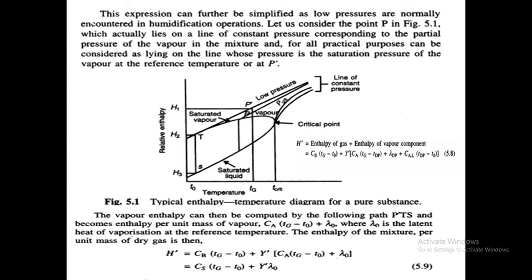The corresponding pressure is the critical pressure. The T-S P' section — the vapor section or saturated vapor — is above the curve, and the saturated liquid is the below section. Some lines at low pressure conditions are normally considered in the humidification operation; these are lines for constant pressure.